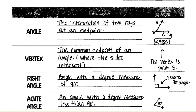Acute angle: an angle with a degree measure less than 90 degrees. So if I were to take a 90-degree angle and move it a little bit over, that would be an acute angle.